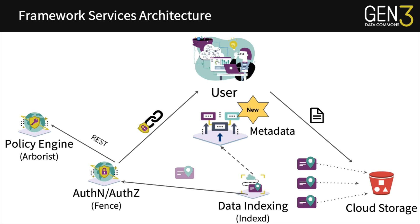The overall architecture of our framework services includes, on the authentication and authorization side, an identity provider for authentication and an authorization service. That logic is consistent within our service called Fence. We also have a policy engine called Arborist, which stores the source of truth for what users have access to and what resources they are allowed to access. We have our data indexing service for accessing file objects in cloud storage, as well as indexing and maintaining GUIDs — globally unique identifiers and persistent identifiers for these file objects. Something that is new to the framework services is our metadata API, which links the GUIDs from the file data with metadata associated with the file objects.